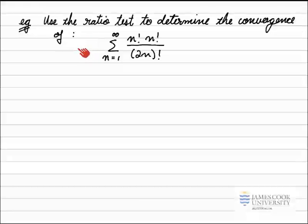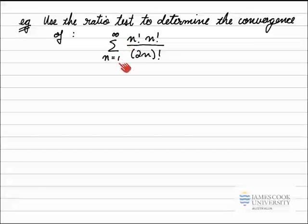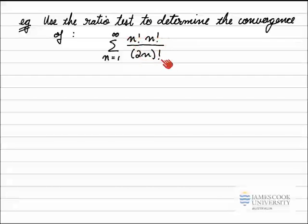In this example, we've been asked to use the ratio test to determine the convergence of this infinite series: the sum from n equals 1 to infinity of n factorial times n factorial over 2n factorial. The first thing to note is that you cannot cancel factorials with other factorials unless it's exactly the same factorial. So we can't cancel an n factorial with anything on the bottom here.